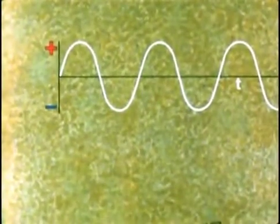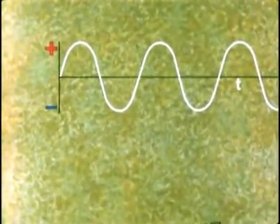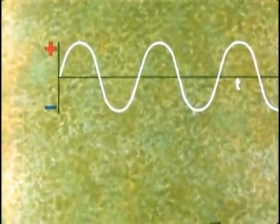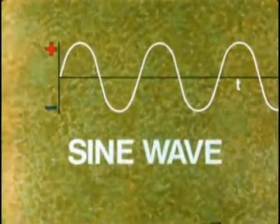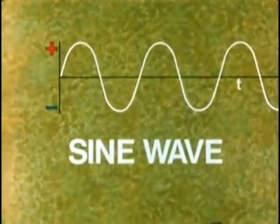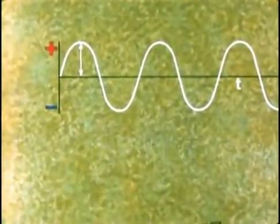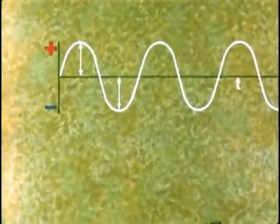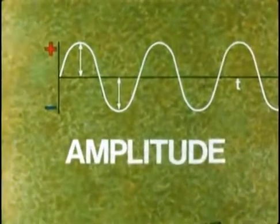So diagrams like this are often used to illustrate alternating currents and voltages. And as we heard, this particular one is called a sine wave. The peak value of the current, one way or the other, is called the amplitude of the wave.